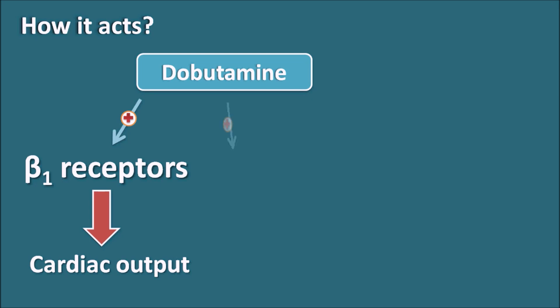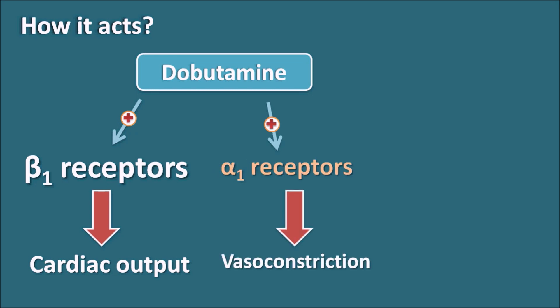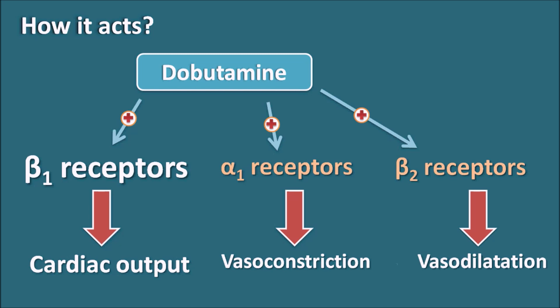Apart from beta-1 receptors, Dobutamine can also show a little activity on the alpha-1 receptors, which results in vasoconstriction. Dobutamine can also have some action on the beta-2 receptors, which results in vasodilatation. Because Dobutamine acts on both alpha-1 and beta-2 receptors — producing vasoconstriction and vasodilatation respectively — these effects are counterbalanced so that no significant rise in blood pressure is observed at a low dose.